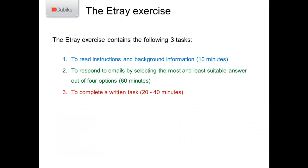To give you a flavour of what the E-TRAY task actually consists of: in terms of our off-the-shelf versions, we've got three core tasks. First, at the beginning, candidates read instructions and have the opportunity to familiarise themselves with background information — typically around ten minutes is allowed for that. Then they move on to the main task, the most time-consuming part of the E-TRAY, where they respond to emails. Emails come into their inbox in a dynamic way — as they respond, more emails start to filter in, representing real life, where people respond to you and new messages arrive over the course of the exercise.